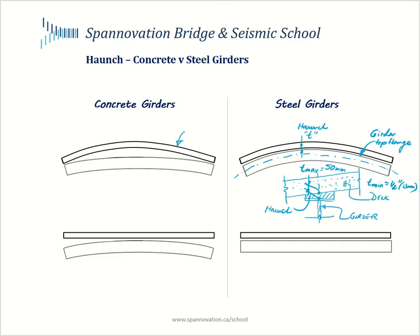In contrast, for precast concrete girders, because we don't have the ability to build in the profile of the roadway within the girder, there is greater variability in the haunch thickness along the length of the girder compared to steel plate girders. In this situation, the curvature of the girder — which is under deflection from self-weight and the weight of the concrete deck on top of it — is milder than the curvature of the vertical curve. Therefore, the minimum haunch occurs at the girder ends, while the maximum haunch thickness occurs at mid-span. Whereas for steel plate girders, we had a generally uniform haunch thickness over the entire length.